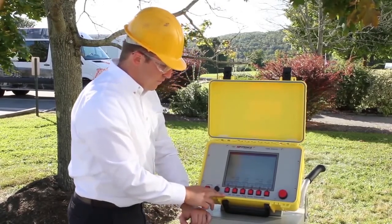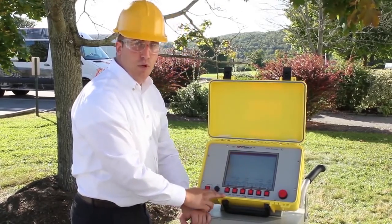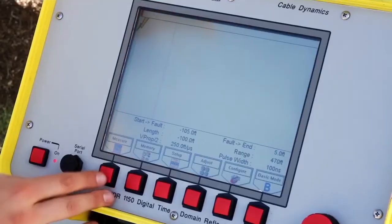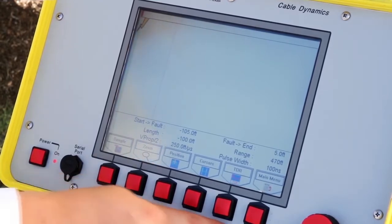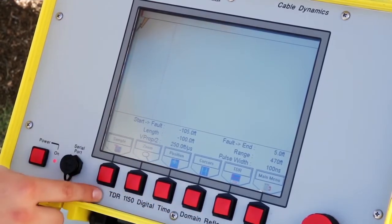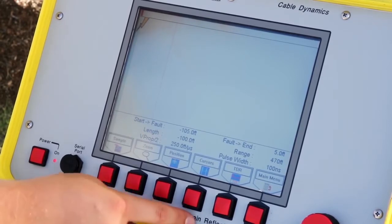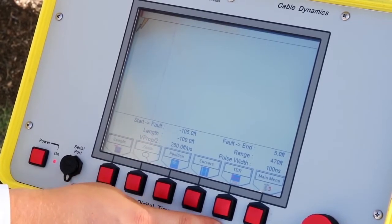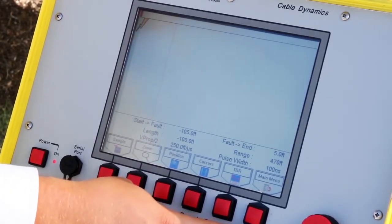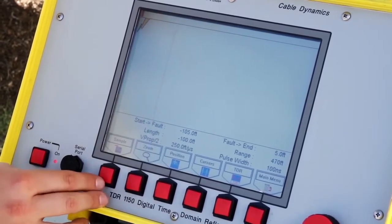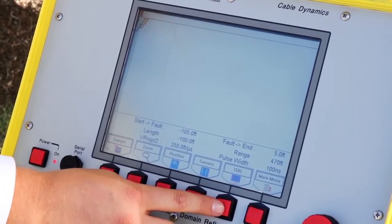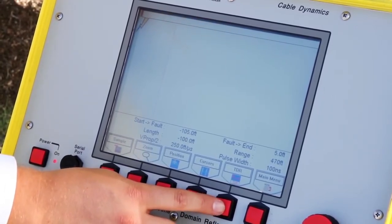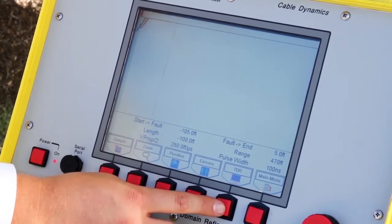To start the cable fault locating sequence in advanced mode, we want to start by pressing measure. Upon pressing measure, a new set of options will be displayed upon the bottom of the TDR. From left to right, we have sample, zoom, position, cursors, TDR, and main menu to get back to the advanced mode main menu. To start the test, we'll hit sample. We'll also notice that our TDR is selected as well, meaning it will send a low voltage impulse through the cable seeking impedance changes, and it will display those particular impedance changes on the screen.